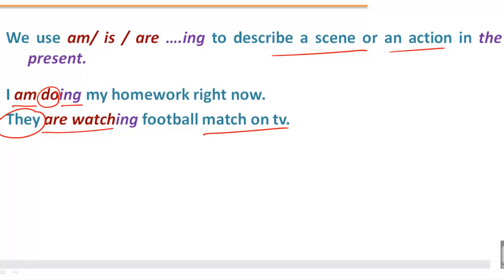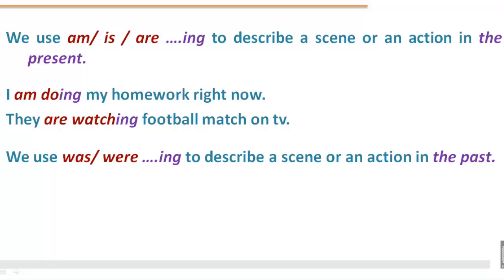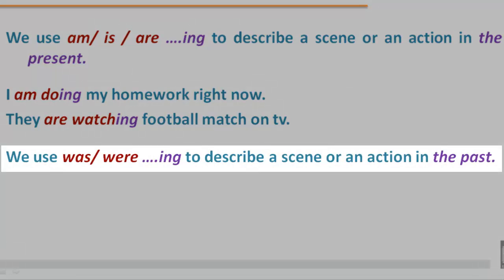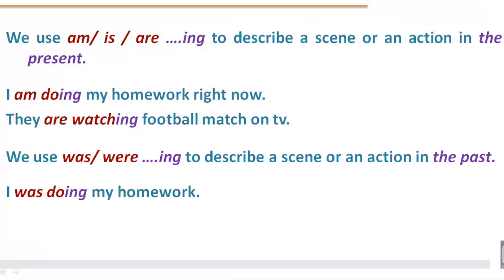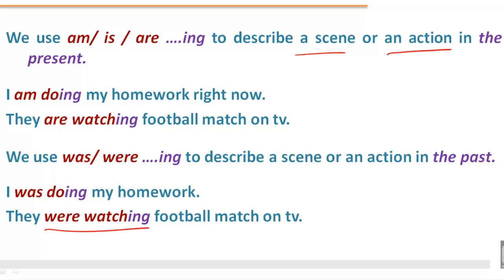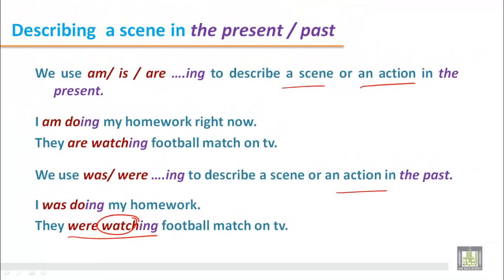At this moment, they are watching football match on TV. We use was or were with the verb -ing to describe a scene or an action in the past. For example: I was doing my homework. This sentence shows was and the main verb do with -ing, describing an action in the past. They were watching football match on TV. We find were and the verb watch with -ing, also describing an action in the past.